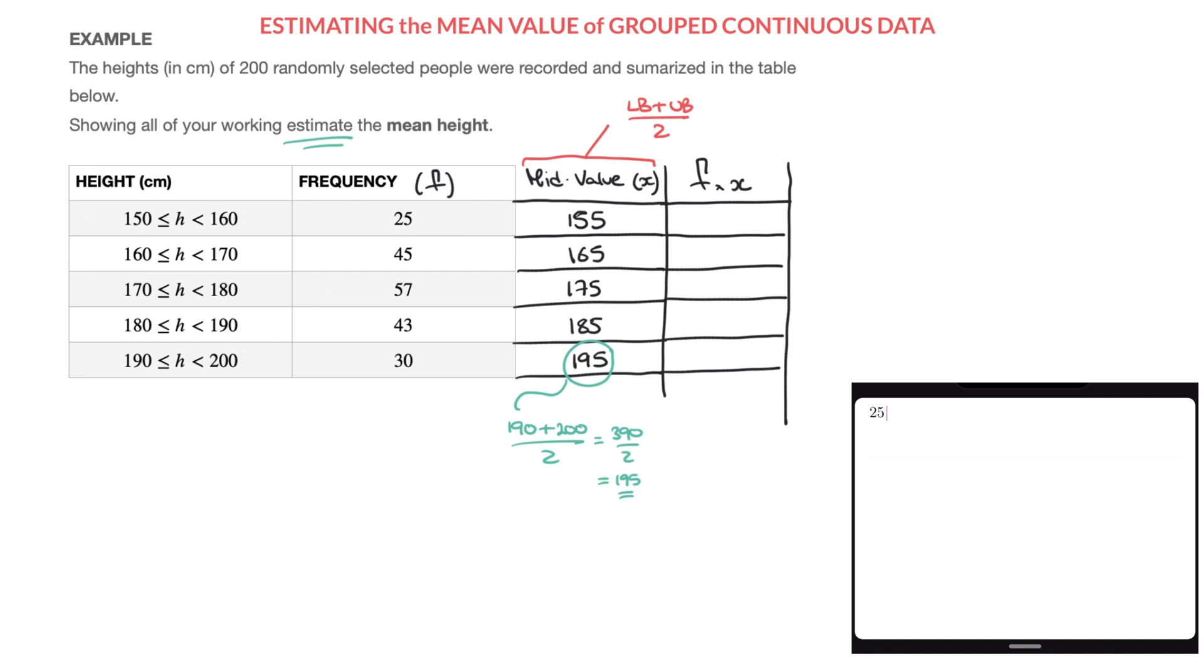And by all means check, but with my calculator, 25 times 155 is equal to 3875. So I'll write that here, that's 3875.